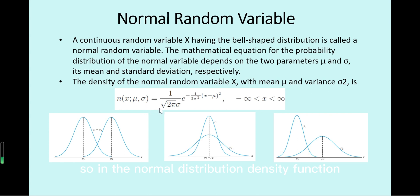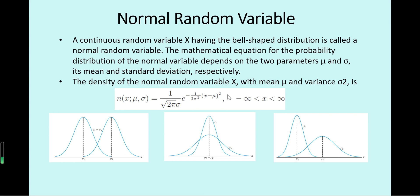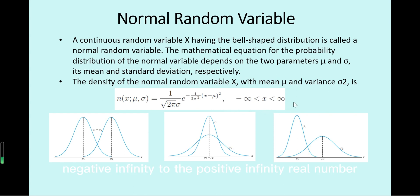The normal distribution density function is: 1 divided by the square root of 2pi times sigma, then multiplied by e raised to the power of minus 1 divided by 2 sigma squared, times (x minus mu) squared. The available variable for normal distribution ranges from negative infinity to positive infinity.